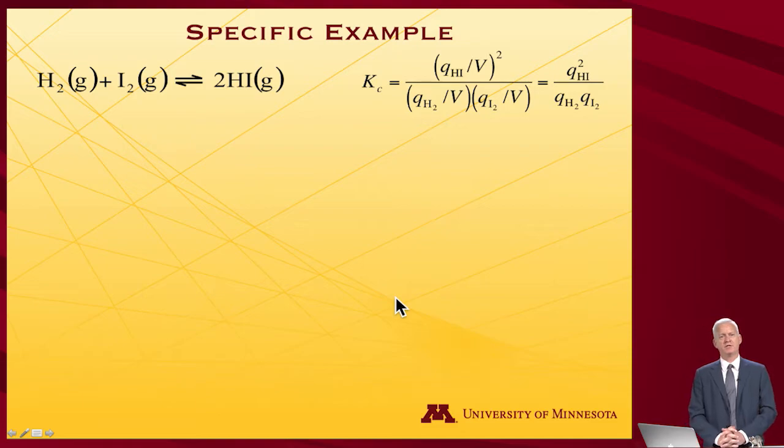So here's hydrogen plus iodine, both as gases, reacting to make two molecules of hydrogen iodide gas. This is another one to be conducted in a fume hood. And so from what we had on the last slide, the equilibrium constant in concentration units will be partition function over V, partition squared, because we've got two of them. Partition function over V for hydrogen, partition function over V for iodine.